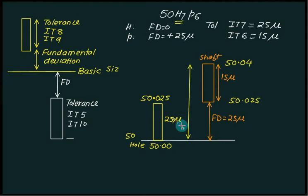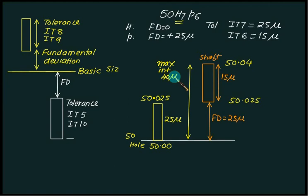The maximum interference is 25 plus 15 equals 40 microns. For minimum interference, select the minimum shaft size and maximum hole size, which gives the same value, so the minimum interference is zero. This represents a transition fit.